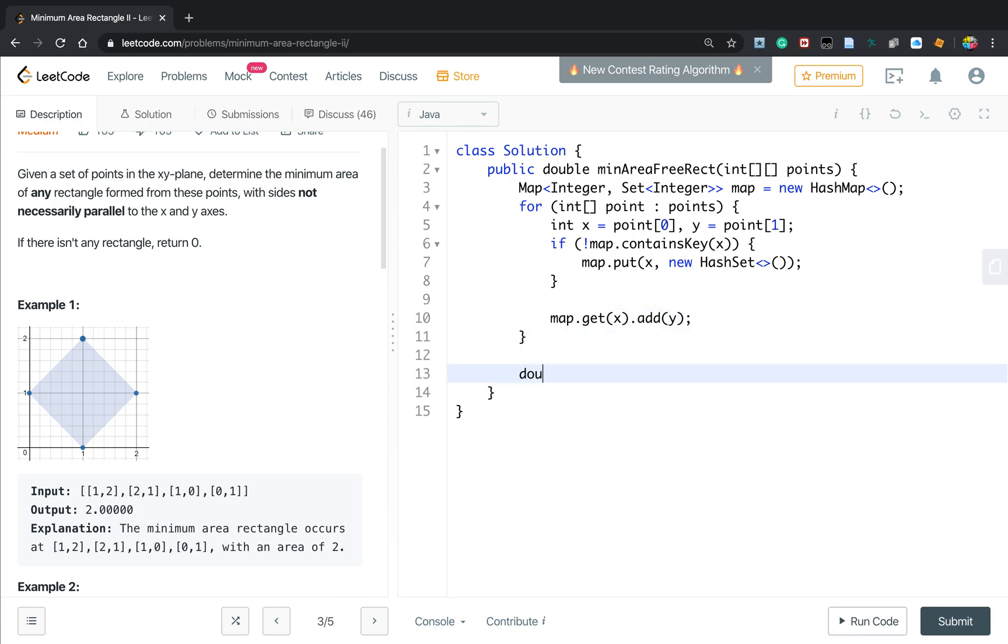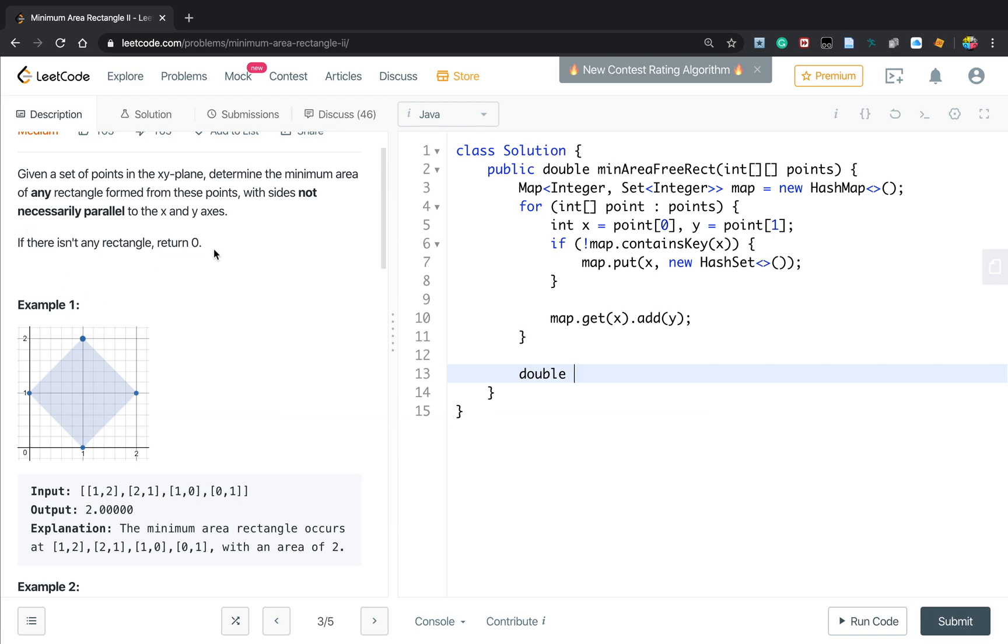Then we should, because we need to get a global minimum area, so at first we initialize it to the max value. Then, get the n, which is the point dollar length. Then for int i equal to 0, i less than n i plus plus.